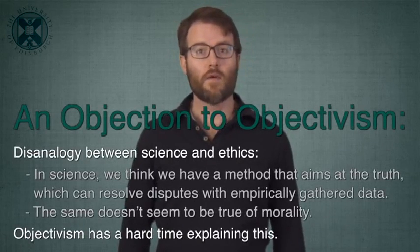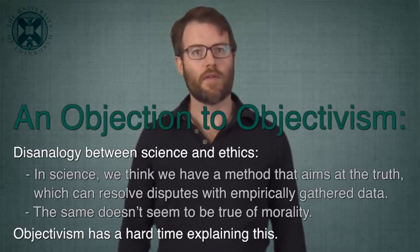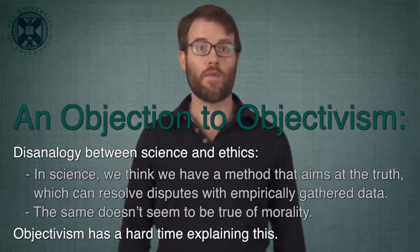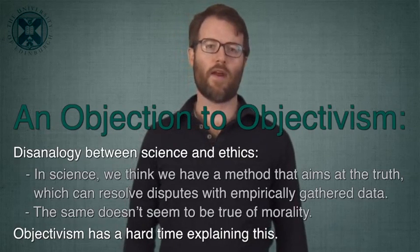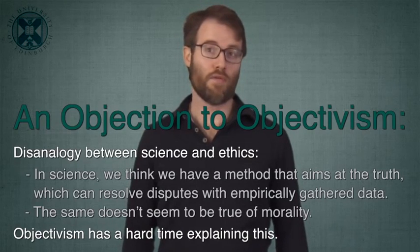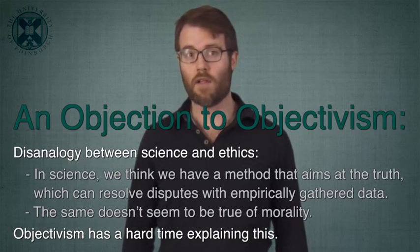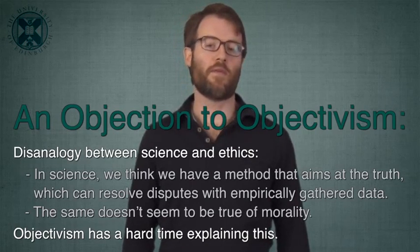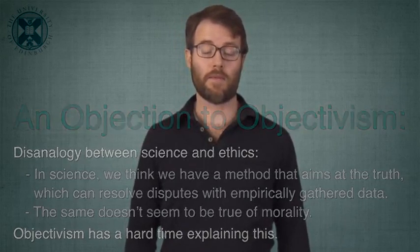Let's start with an objection to the first theory we discussed, objectivism. At the beginning of this lecture, we contrasted intuitions about science and intuitions about morality. In science, we think we have a method that aims at the truth, which can resolve disputes with empirically gathered data. The same doesn't seem to be true of morality. Moral disputes, when we have them, often seem to be recalcitrant and unresolvable. There's nothing like empirical data that could prove one side right and the other side wrong. This seems like an important difference between morality and science, which objectivism has a hard time explaining.